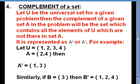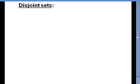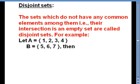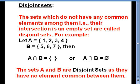If B equals {3}, then B complement will be {1, 2, 4}, containing all elements of the universal set not in B. The next topic is disjoint sets. Sets which do not have any common element among them — that is, their intersection is an empty set — are called disjoint sets. For example, A equals {1, 2, 3, 4} and B equals {5, 6, 7} have no common element, so A intersection B is empty and they are disjoint sets.